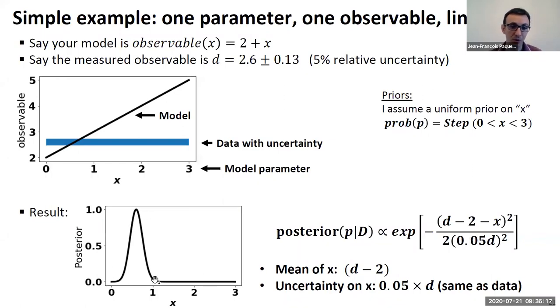And you get this distribution, which is trivial, right? So you get a mean that is exactly what you expect from solving this, which is d minus 2. And you get an uncertainty on x that is simply propagating this 5% uncertainty from the data. So your width here is simply 0.05 times d, right? Trivial example. And you recover, of course, exactly what you expect to recover from it.